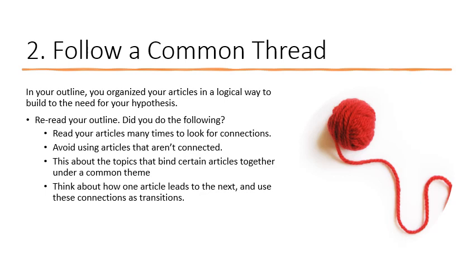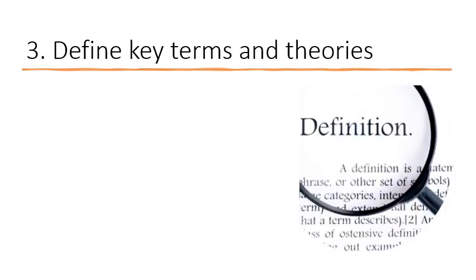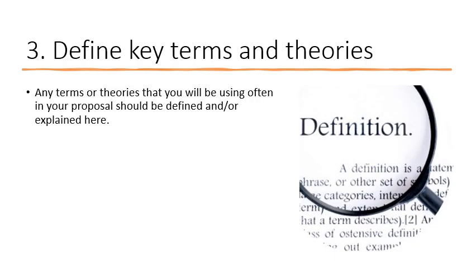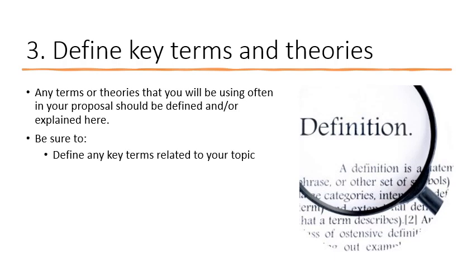Think about how one article leads to the next and use these connections as transitions among topics. Stay on topic, linking your reasoning back to that common thread — this thread of logic should be apparent through your entire lit review. Another part of your lit review is to define key terms and theories. Any terms you're going to be using, like phrases that are part of psychology, you want to define or explain them here.